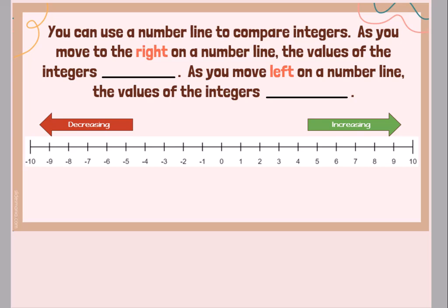Okay, so we can use our number line to help us compare integers. As you move to the right on a number line, the values of the integers increase. So we learned this last year in elementary. If we start at zero and we move to the right, we go to one. If we move to the right again, we go to two. Then three, four, and so on. And as you're moving to the right, your numbers are getting larger and larger and larger.